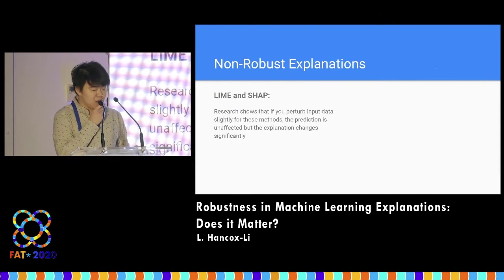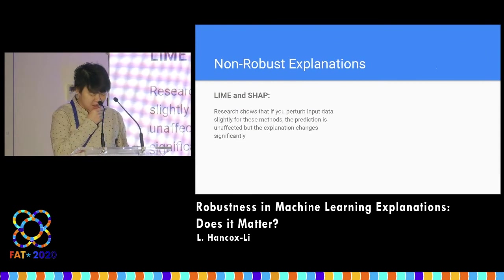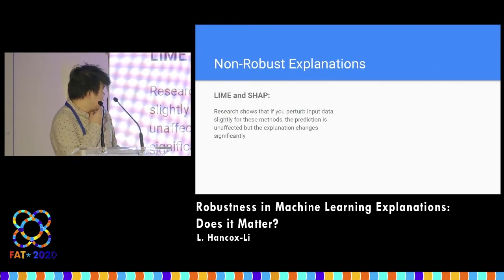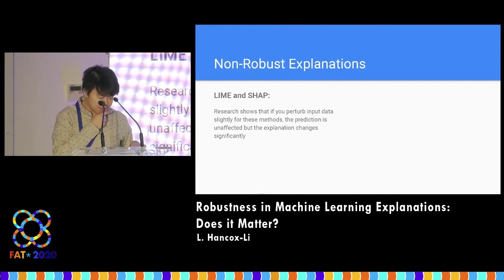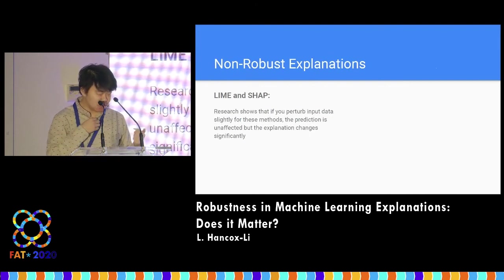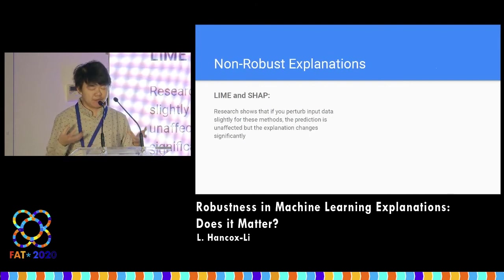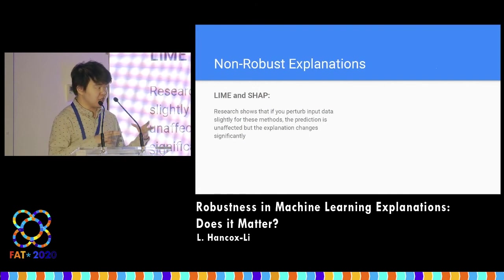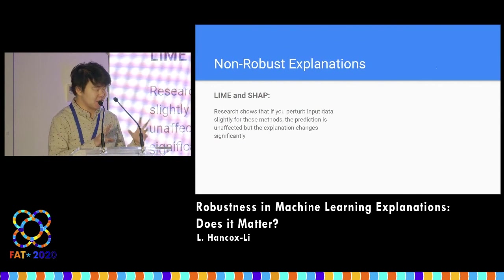There are known examples of non-robust explanations. We know that LIME and SHAP are not robust — there's a paper showing that you can perturb the input data for LIME and SHAP and the prediction is not affected, but the explanation changes dramatically. So even though the outputs are robust, the explanation itself is not. This is not ideal if we think the explanation is something objective out there in the world.